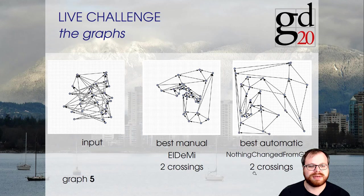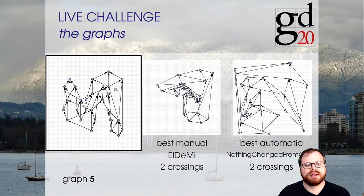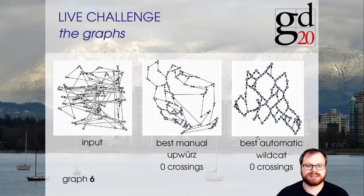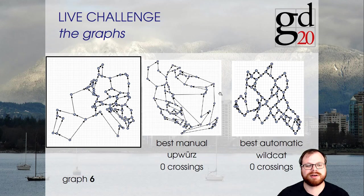In graph 5, both manual and automatic categories had the same number of crossings; this was actually just a spiral that was modified. Graph 6 also had zero crossings in both categories, but the automatic solution is much nicer because it preserves a lot of structure. If you stare at it, you can figure out that this is actually a map of Europe — you can still figure out which country is which in the automatic solution, but not in the manual one.